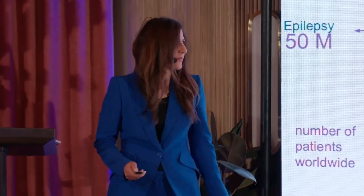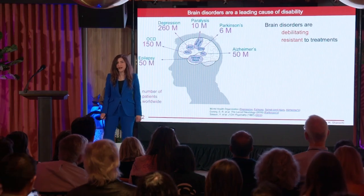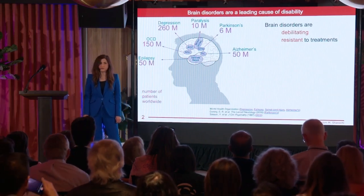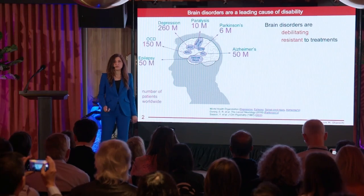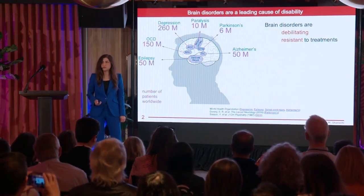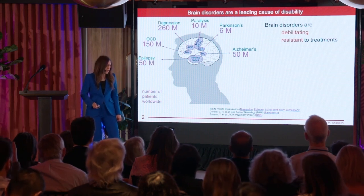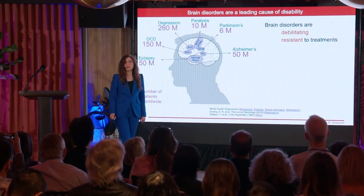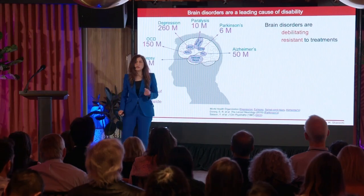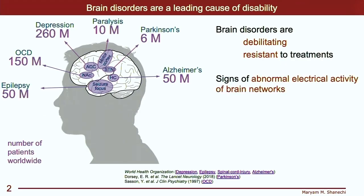Disorders are a leading cause of disability worldwide and affect tens of millions of patients. Unfortunately, a large proportion of patients are actually resistant to any of our current therapies, whether medication or psychotherapy. This number, in the case of major depression, is 20 to 30 percent of patients — essentially, they're out of options. And if you think about something like paralysis, there's largely no pharmacological options. So what do we do for these patients?